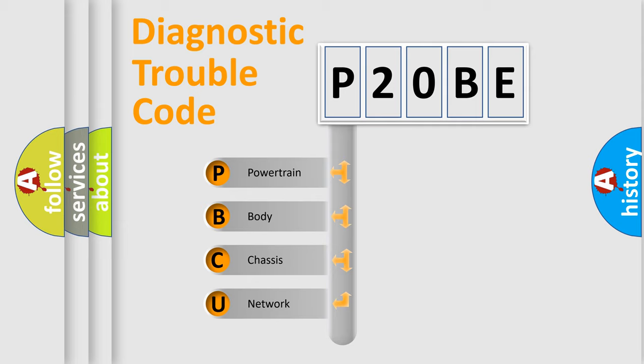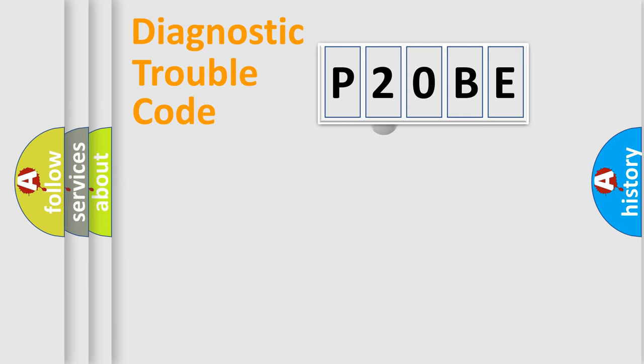We divide the electric system of automobile into four basic units: Powertrain, body, chassis, and network. This distribution is defined in the first character code.